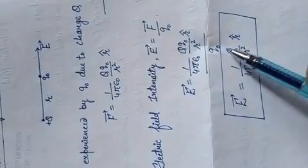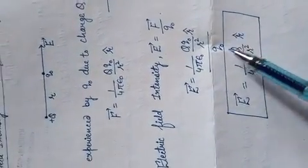Q naught cancels with Q naught and you get E equals 1 by 4π epsilon naught, Q upon R square R cap. This is the final relation. This is the electric field intensity due to a point charge.